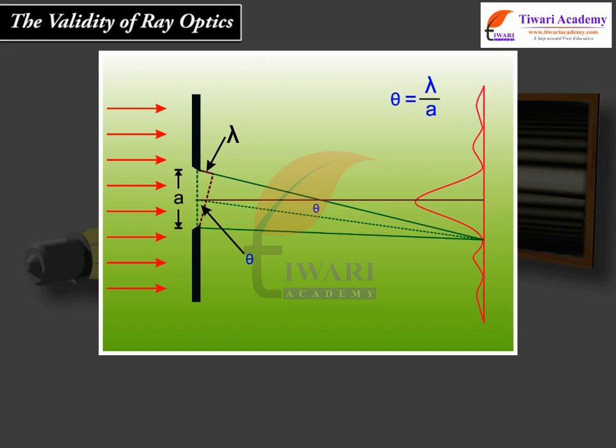We thus approximately equate z lambda upon A with A. This gives the distance beyond which divergence of the beam of width A becomes significant.